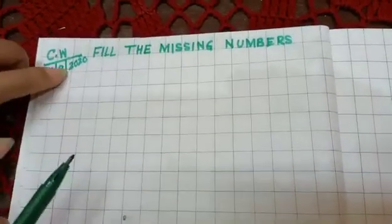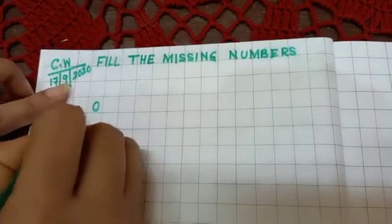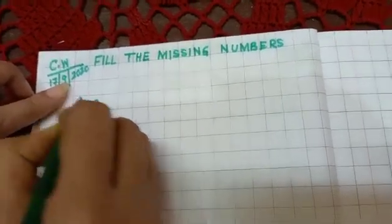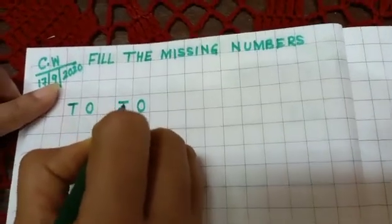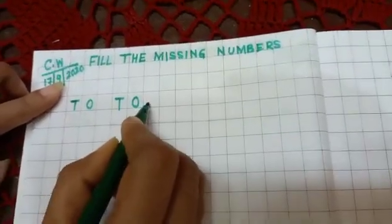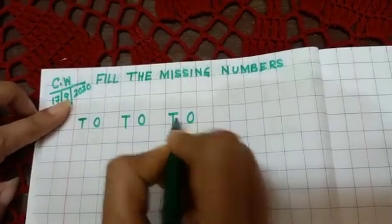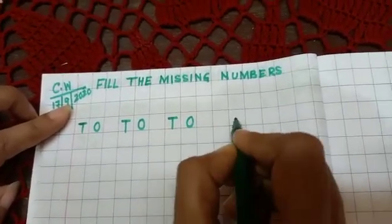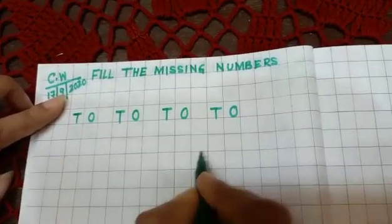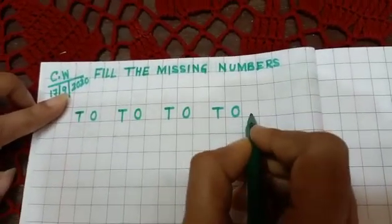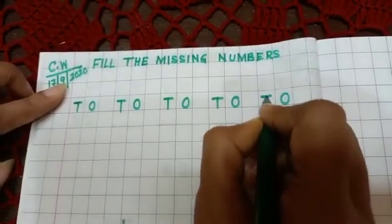Then you leave here two boxes and write here 'ones tens'. Leave one box and write 'ones tens' again. Repeat this — leave one box and write 'ones tens' — across the line.